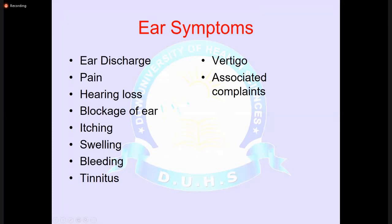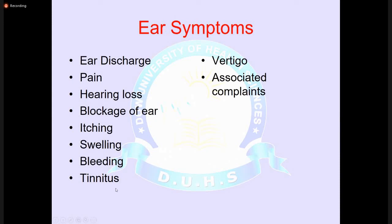Bleeding from the ear is another complaint — sometimes of immediate onset, sometimes gradual. Using cotton buds may injure the tympanic membrane and cause bleeding. Tinnitus is a ringing sensation in the ear. When the cochlea is weak, there can be irritation of the cochlear nerve, causing a disturbing noise especially in silent environments, most often felt by patients at night.